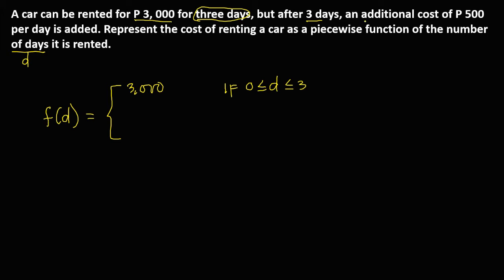But after 3 days, there is an additional cost. We have 3,000 plus for the additional cost, that's 500 per day. If the number of days is equal to 5, therefore 5 minus 3 because the cost for 3 days is 3,000, that's equal to 2. Therefore, exceed in 2 days and the cost per day is 500. That's 2 times 500, that's equal to 1,000 and this is the additional cost.